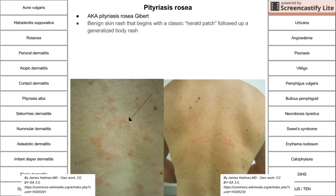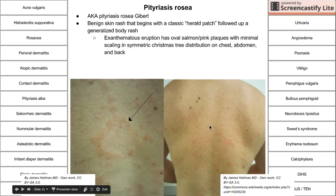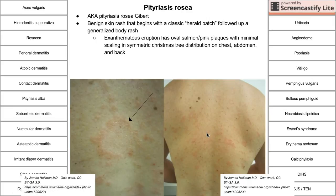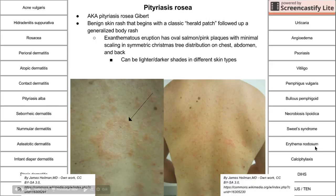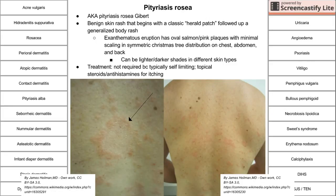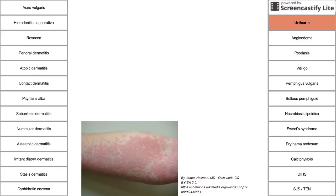Pityriasis rosea is a skin rash that begins with a classic herald patch; then about 10 days later there is an exanthematous eruption of oval pink or salmon-colored plaques with minimal scaling in a Christmas tree distribution. The rash follows skin tension lines, appearing on the back, abdomen, or chest. It can be dark or light depending on skin type. Treatment is not required as it is self-limiting, usually clearing in five to eight weeks, but topical steroids or antihistamines can be used if itchy.